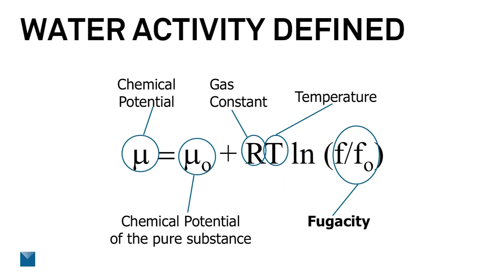When we're talking about energy systems, we can adapt the Gibbs free energy equation to determine activity of the water in a system at a given temperature. If we want to determine the energy of water in a system, it would be equal to the energy of pure water plus the gas constant R, times the temperature, and then the natural log of fugacity.